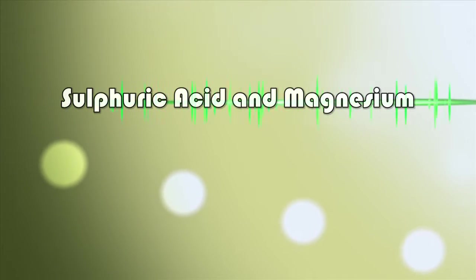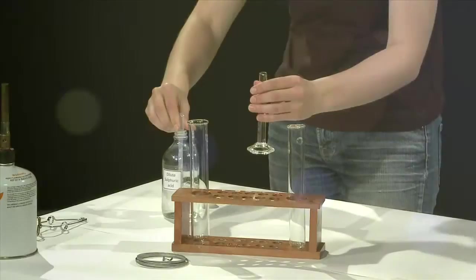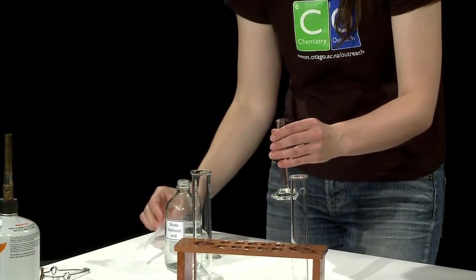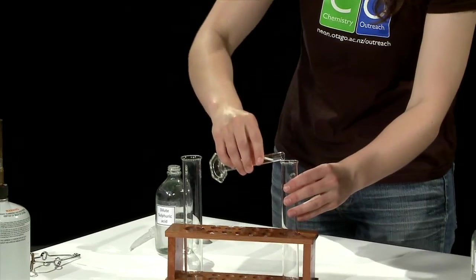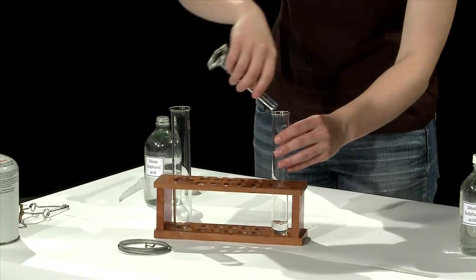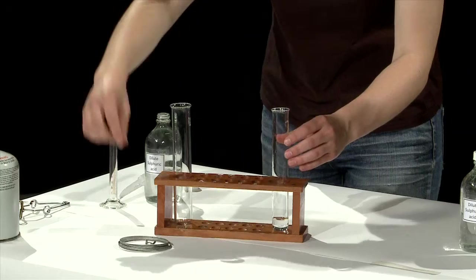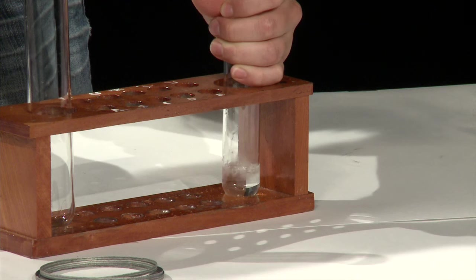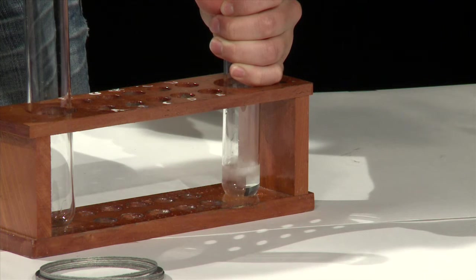Experiment 1. Measure out 10 milliliters of sulfuric acid. Pour that sulfuric acid into a boiling tube. Now add a 2 centimeter strip of magnesium. Watch carefully and record down any observations you make.